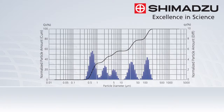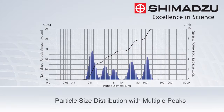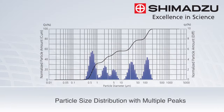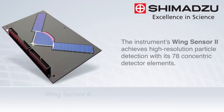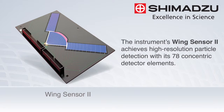Some complex samples may contain several particle size distributions. With its high resolution capabilities, the SALD2300 enables the acquisition of data with multiple peaks. The instrument's Wing 2 sensor achieves this with its 78 concentric detector elements.